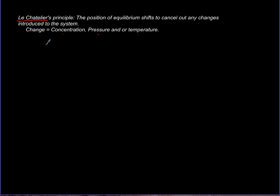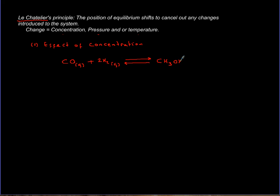Let's look at the effect of concentration first. I'm going to give you one reaction, and we are going to dissect it. The reaction is the production of methanol from gases of carbon monoxide and hydrogen. Methanol is the first member of alcohol and it's a fuel of choice. The enthalpy of this reaction is negative 202 kilojoules per mole — negative stands for exothermic. The energy is exiting the system; it's on the product side, and it's crucial for when we get to temperature.